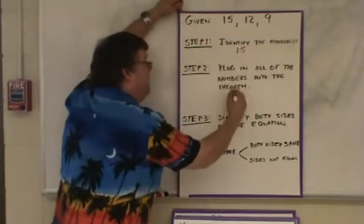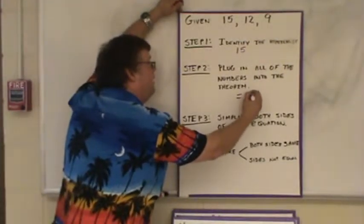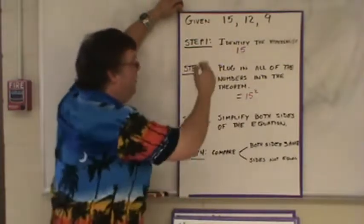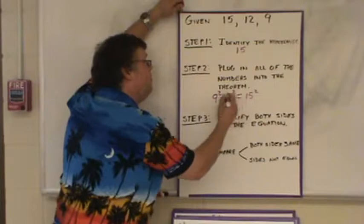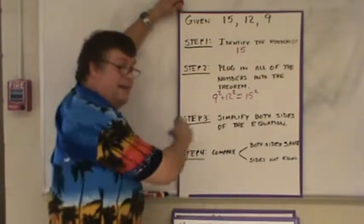Since we know that this is the c, it's going to be on the one side of the equal sign by itself. The other two numbers, it doesn't matter what order I put them in, but they're being squared and added together on this side.